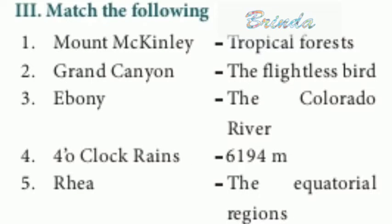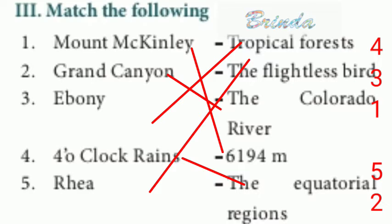Moving on to match the following. Mount McKinley — 6,194 meters. Grand Canyon — the Colorado River. Ebony — tropical forest. Four o'clock rains — the equatorial regions. Rhea — the flightless birds.